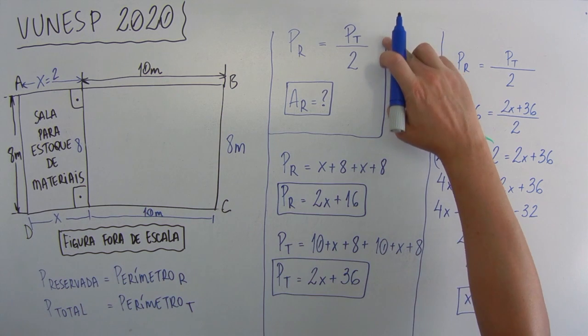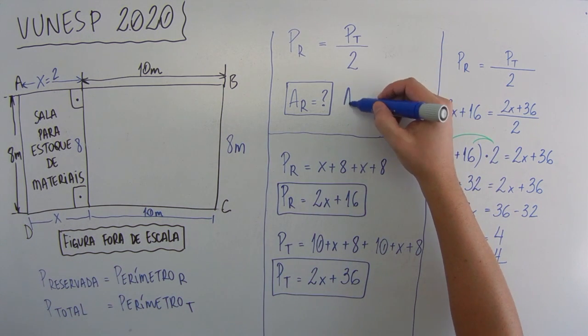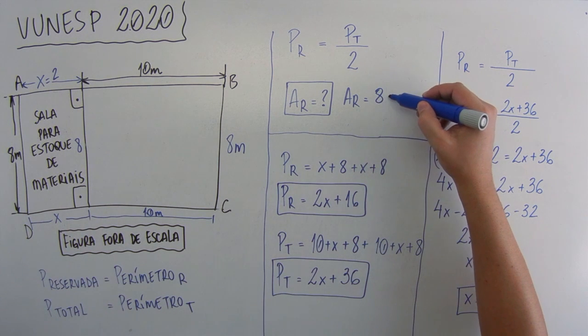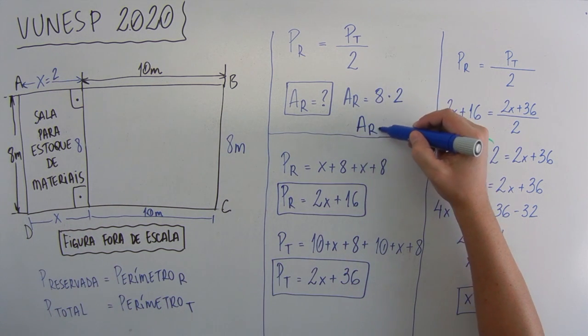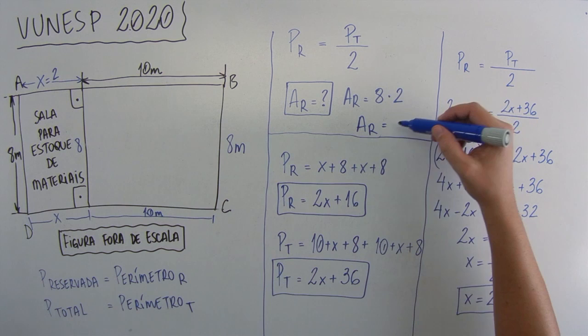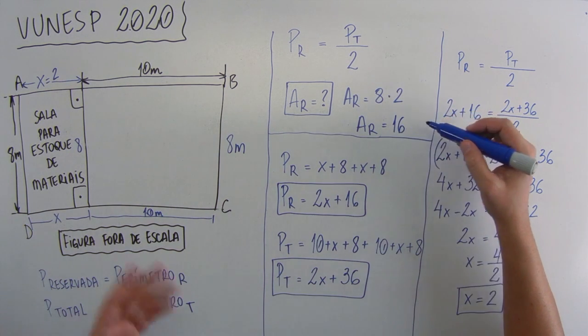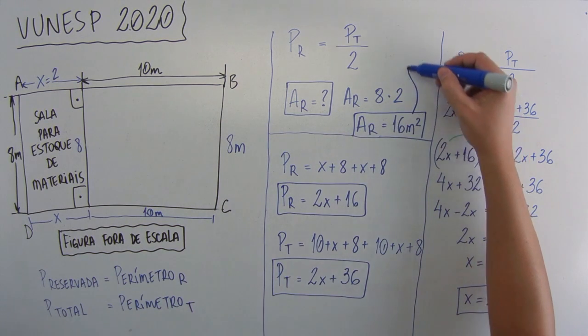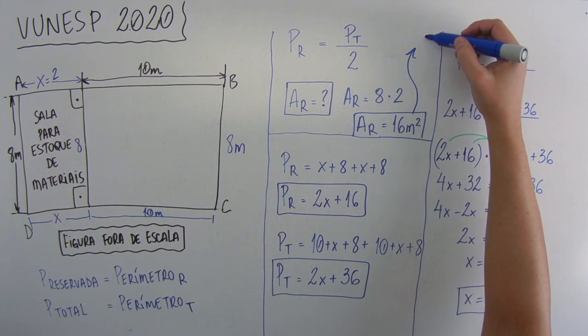E isso é só fazer assim. Essa área reservada é lado vezes lado, então vai ficar 8 vezes 2. A área reservada é igual a 2 vezes 8, ou 8 vezes 2, que vai dar 16. Como tudo está em metro, 16 metros quadrados. E 16 metros quadrados está na letra C.